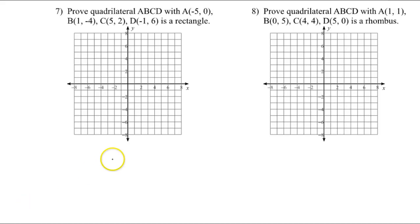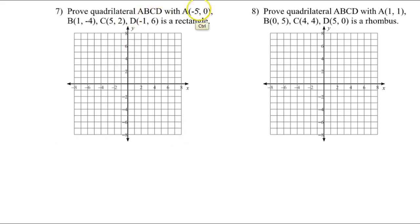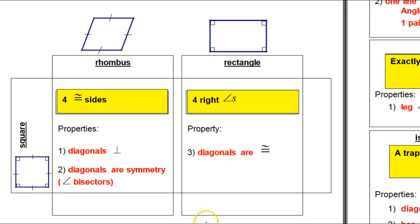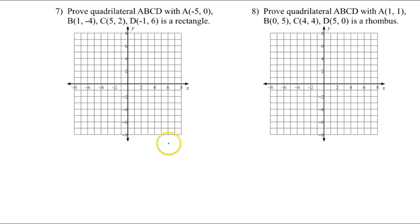In this video, I will show you how to prove that a quadrilateral is a rectangle or a rhombus. You're going to have to state your strategy up front. For problem number seven, we're given the four vertices, and we're supposed to prove that quadrilateral ABCD is a rectangle. A rectangle is a quadrilateral that has four right angles — that's the definition. So our strategy has to be to show that we have four right angles.